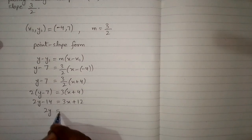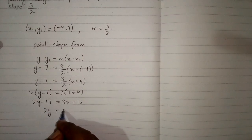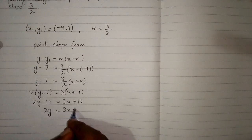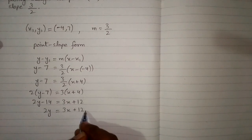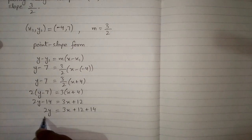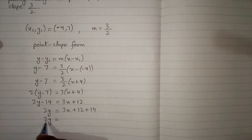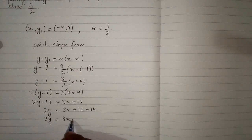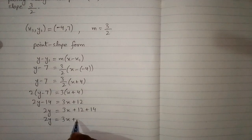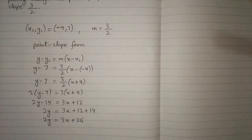Then we take this 14 on the other side of equation, so minus 14 will become plus 14. So we have 2y is equal to 3x plus 12 plus 14 is 26. And this is the required equation.